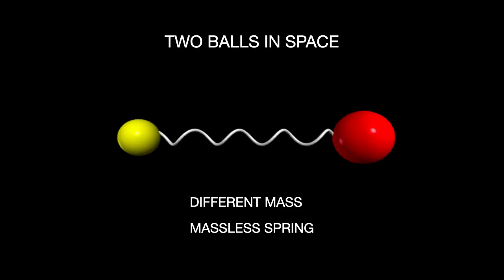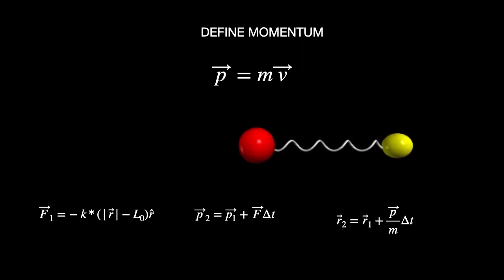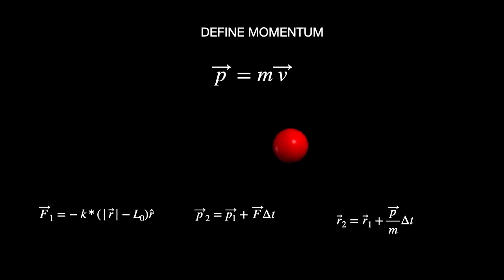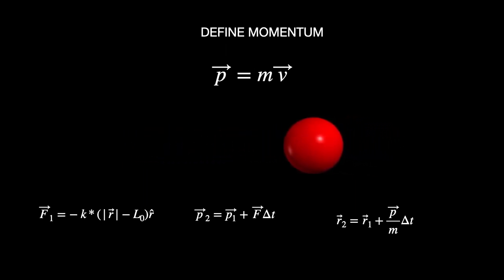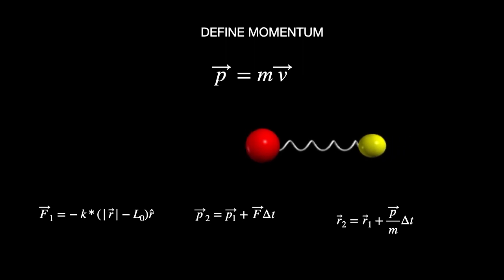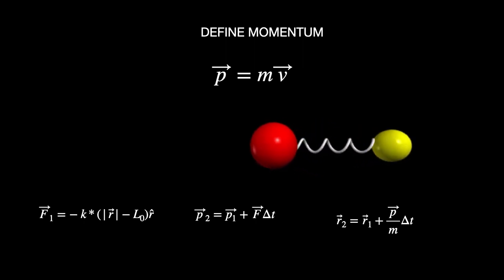Suppose I have two objects in space — two masses with different masses, connected by a massless spring. If I know the mass and the spring constant, I can calculate the spring force on each mass and model the motion. If I let them pull apart and oscillate back and forth, I can build this model very easily. Momentum is mass times velocity, and once I calculate the force, I can use it to update the momentum in a short time interval, use the momentum to update the position, and keep repeating. This is a Python program of two masses oscillating with a spring connecting them.